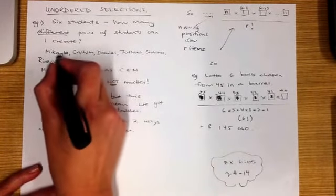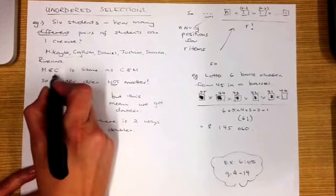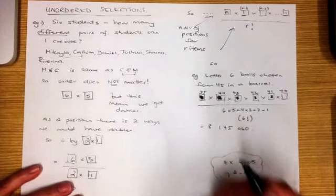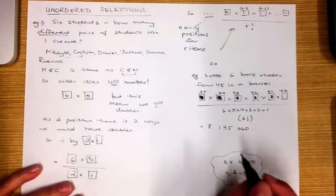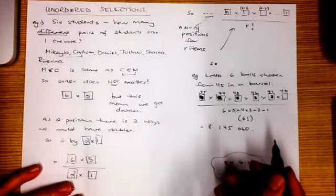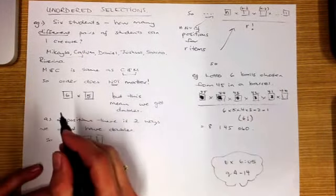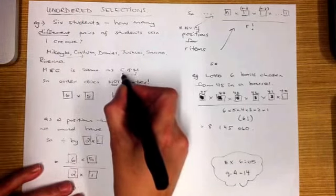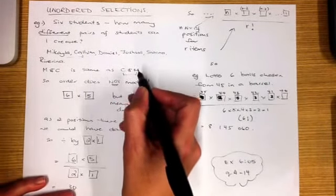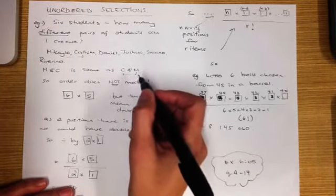So if I was to put Michaela and Callum together as a pair — Michaela and Callum — this is the same pair as putting Callum then Michaela. It doesn't matter what order I choose my pair in. If I choose Michaela first then Callum second, it's exactly the same pair as if I choose Callum first and then Michaela second. So here we are going to get double-ups — pairs or combinations that are the same.